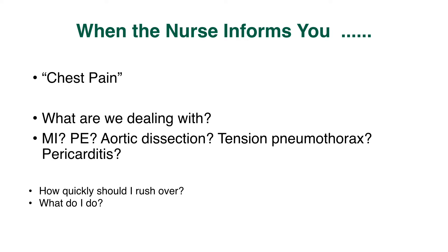When being informed of a patient complaining of chest pain, you need to know what you are dealing with. Is it a life-threatening condition, such as myocardial infarction, pulmonary embolism, aortic dissection, or a tension pneumothorax? How quickly should you go and attend the patient? This is very relevant, especially during a busy on-call. And if you are informed over the phone, ask for an immediate or STAT ECG, if not already done.